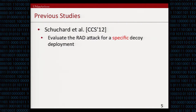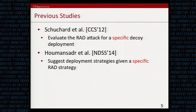Schuchard et al., in their original CCS paper where they proposed the routing around decoys attack, did some analysis and showed that for some decoy placement strategy — for some placement of decoy routers on a selected number of autonomous systems — the censors can effectively block the decoy routing system. In our group, we also did a follow-up work showing that there are some decoy placement strategies able to defeat the routing around decoys attack implemented in Schuchard et al.'s paper. So some decoy placement strategy is able to defeat some routing around decoys attack.